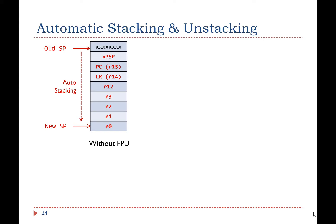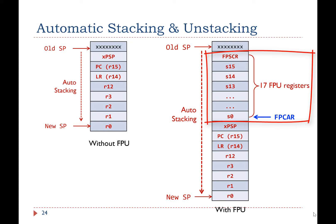Without FPU, hardware automatically pushes these eight registers onto the stack and later automatically pops them off the stack. However, with FPU, 17 FPU registers are also pushed onto the stack, including S0 to S15 and FPSCR. The FPU special purpose register called Floating Point Context Address Register, FPCAR, holds the memory address where S0 is stored in the stack frame.